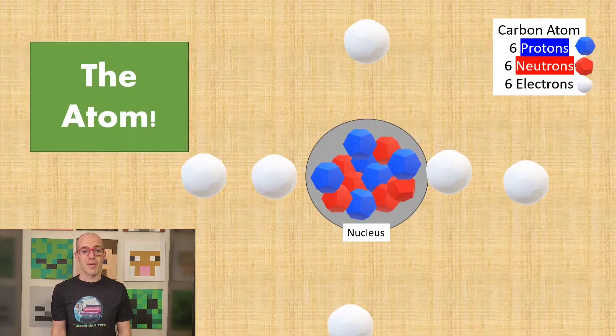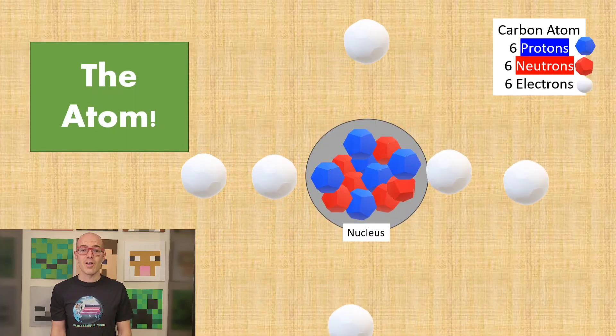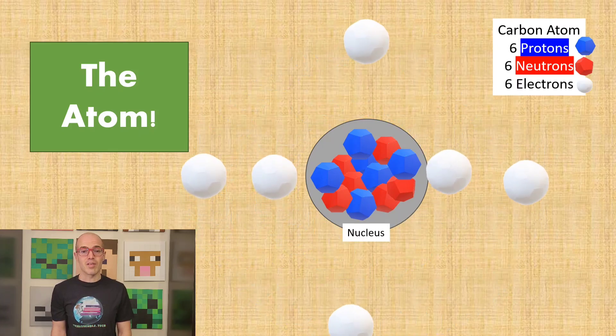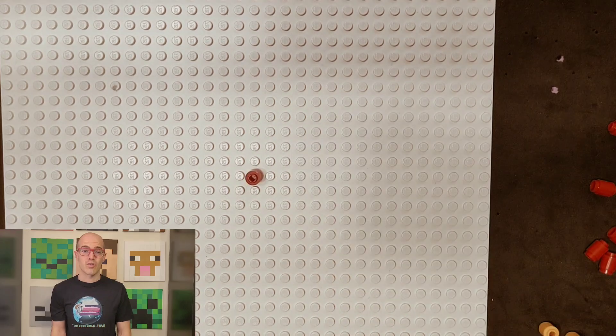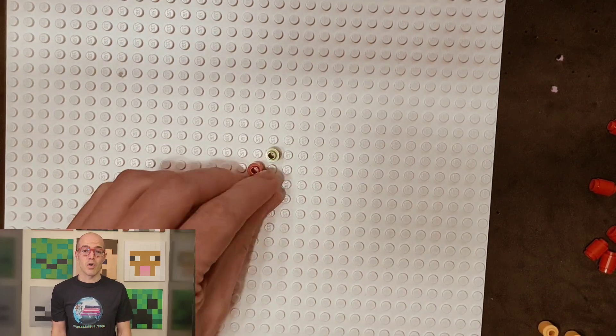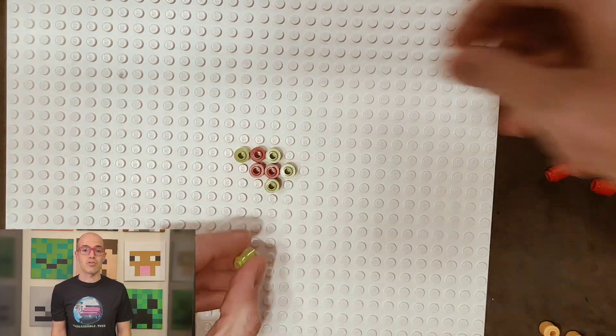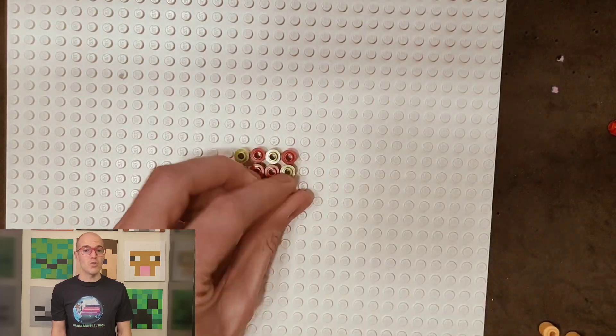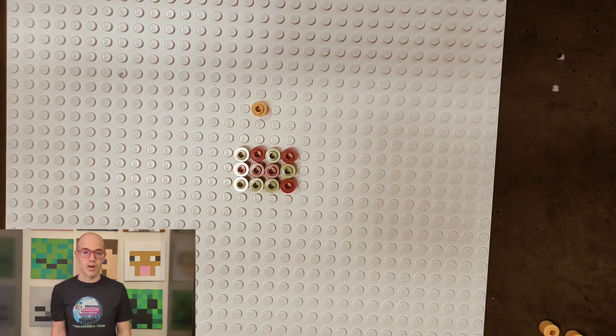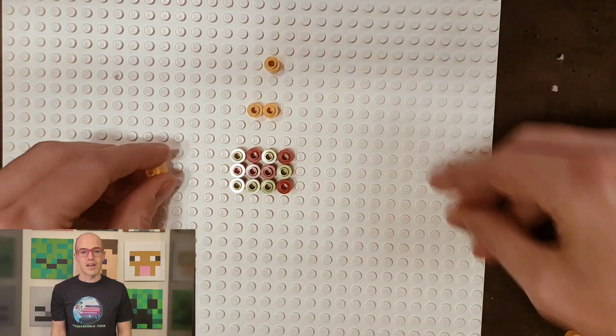Atoms are the fundamental units of matter, serving as the building blocks of everything in the universe. Each atom consists of a nucleus composed of protons and neutrons, surrounded by a cloud of electrons orbiting the nucleus. Protons carry a positive charge, neutrons have no charge, and electrons carry a negative charge, but we will get into that in a minute.